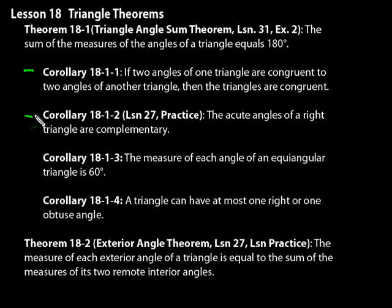And then 18-1-2, we'll prove that one in Lesson 27 in the practice. The acute angles of a right triangle are complementary. So make sure you notice that that's for a right triangle. The acute angles, they have to add up to 90. Since you have one 90 degree angle, the other two must add up to 90. And then 18-1-3, the measure of each angle in an equiangular triangle is 60 degrees. You just think about if it's 180 degrees for all three, divide that by three.